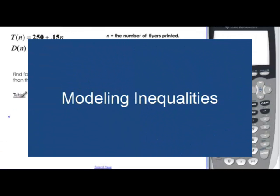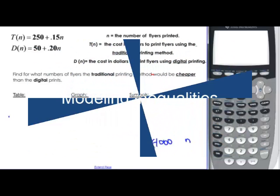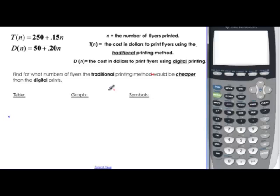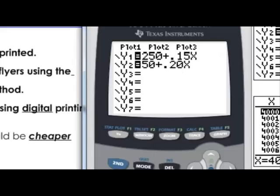So what happens when we look at a model? We want to look at a table and a graph and symbols, just like we've done before, but it's in a model situation.